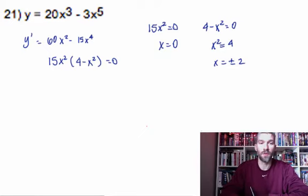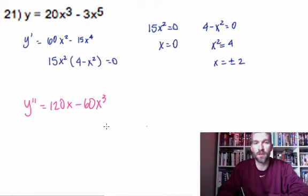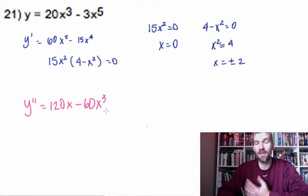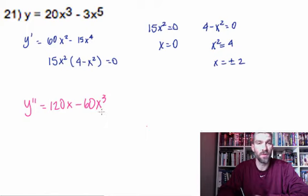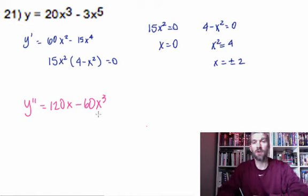Here's the really cool thing — now we use the second derivative. The second derivative is going to be 120x minus 60x cubed. The second derivative test says: take the critical values found from the first derivative and plug them into this equation. If the result is greater than zero, we have a max; if less than zero, we have a min.